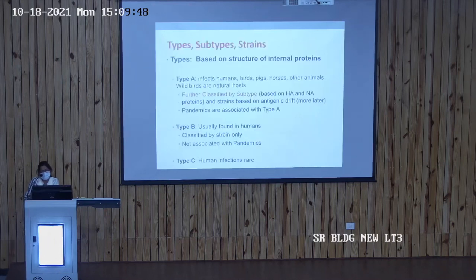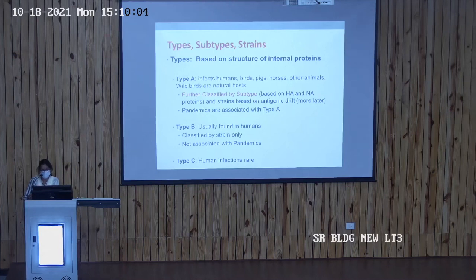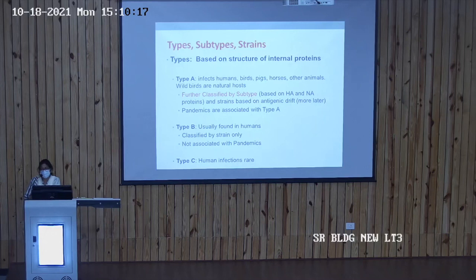Based on the structure of internal proteins, influenza is classified as Type A, B, or C. Type A infects humans, birds, pigs, horses, and other animals, and is further classified by subtype based on hemagglutinin and neuraminidase proteins. Pandemics are associated with Type A. Type B is usually found in humans and is not associated with pandemics. In Type C, human infections are rare.